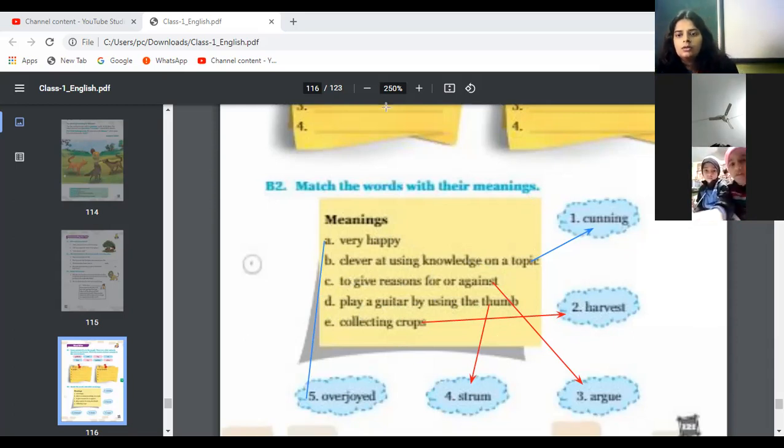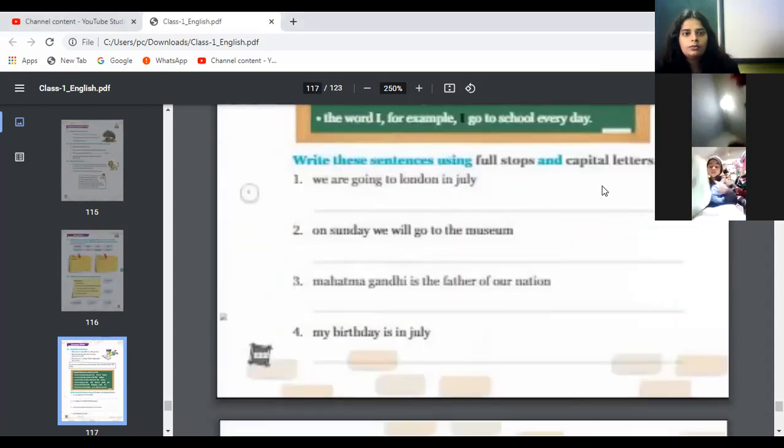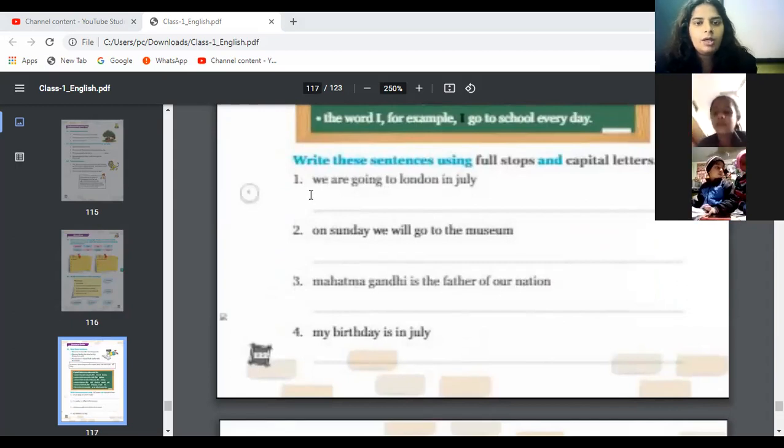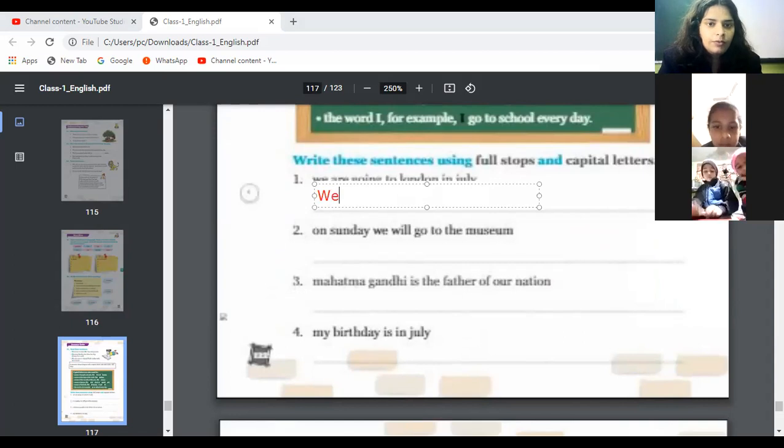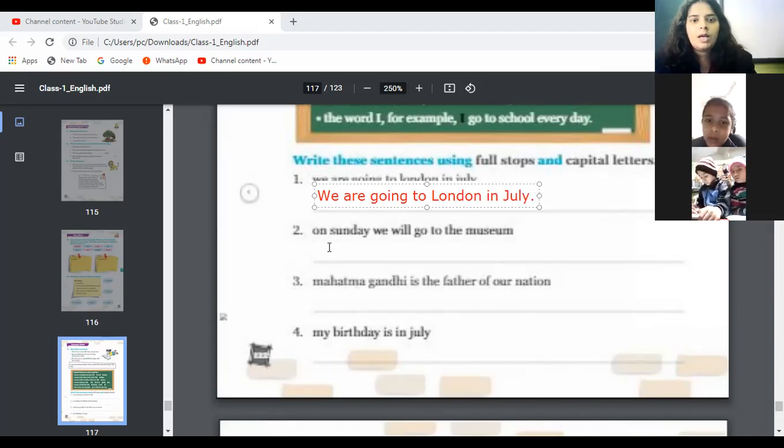Done everyone? Now come to the next page, page number 122. You have to write this in capital letters and full stop. We are going to London in July. Write it.